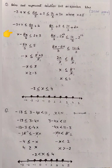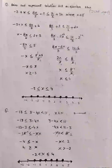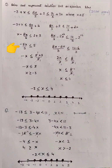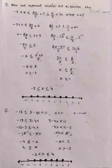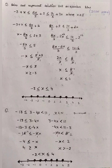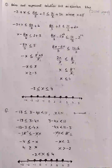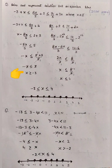We collect all terms containing x on one side and constants on the other, giving us x − 8x/3 ≤ 2 + 3. This simplifies to −5x/3 ≤ 5, and then −x ≤ 3. Since variables cannot be negative, we transfer the minus sign, which changes the symbol, so the solution is x ≥ −3.